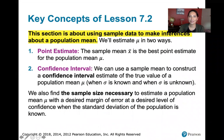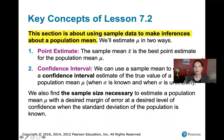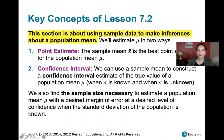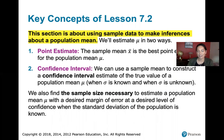But first let's put that in context. Remember Lesson 7.2 is about using sample data to make inferences about a population mean. We're going to do that in two ways: we're going to find a point estimate for the population mean and then we're going to find a confidence interval for the population mean, in much the same way that we found a confidence interval for our population proportion in Lesson 7.1.